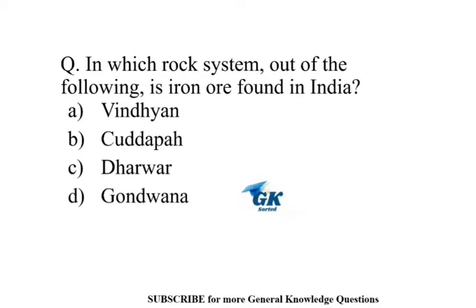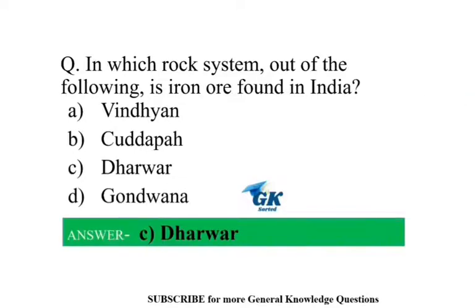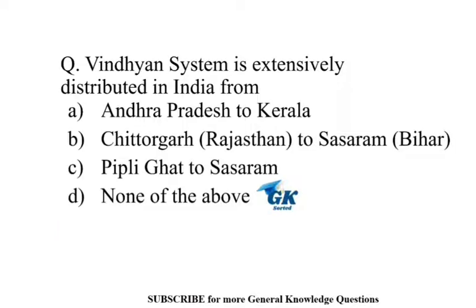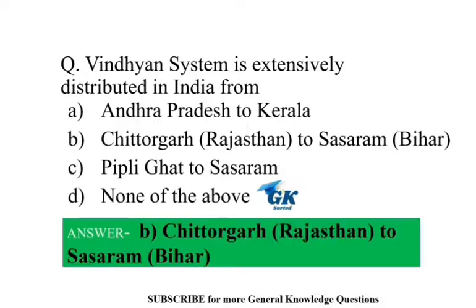In which rock system is iron ore found in India? Darwar. The Darwar system is extensively distributed in India from Chitturghar of Rajasthan to Sasaram of Bihar.